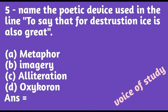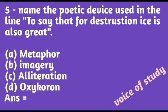Question number five: name the poetic device used in the line 'for destruction, ice is also great.' He is asking you to name the poetic device — which figure of speech is used. The options are metaphor, imagery, alliteration, or oxymoron.